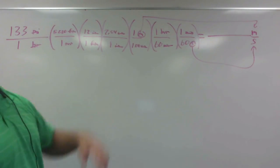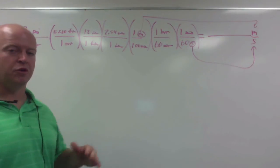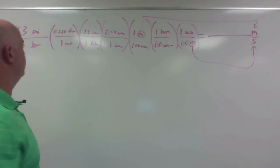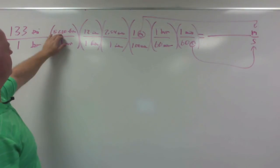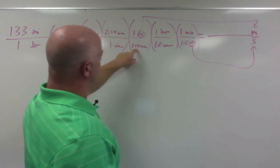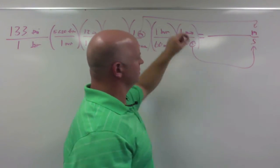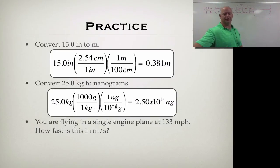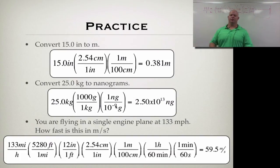Now I have the whole problem set up, and I can do my math. Don't break it up. Do it one big shot. Take 133 times 5,280 times 12 times 2.54 divided by 100 divided by 60 divided by 60. Hit enter, and you get your answer, which should be 59.5 meters per second. So those are our first three practice problems.